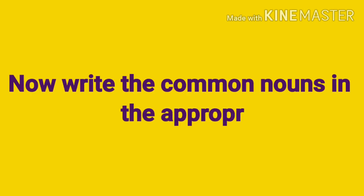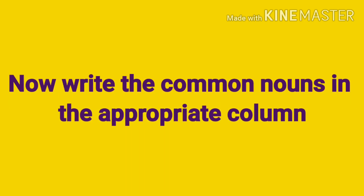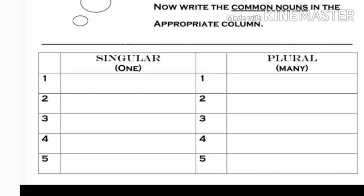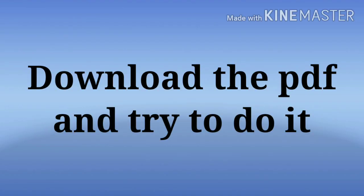Now our next instruction: you have to write these words in the appropriate column. The meaning of appropriate is suitable or proper. Remember, you will only write the common nouns here, not the proper nouns. For example, baby means one baby, or boxes, which means more than one box. So this way, you will complete the whole worksheet, which I will attach with this video.